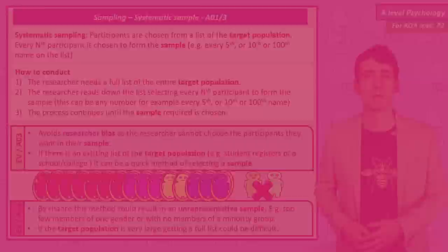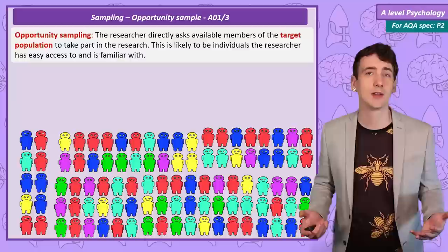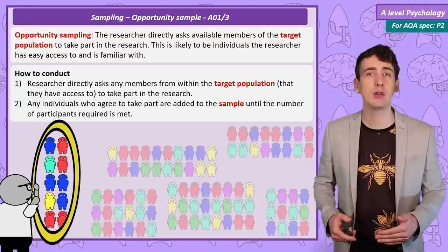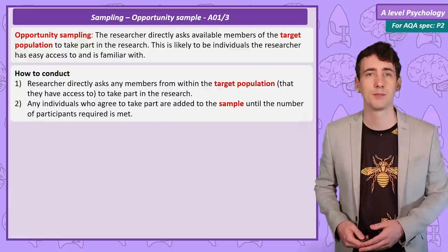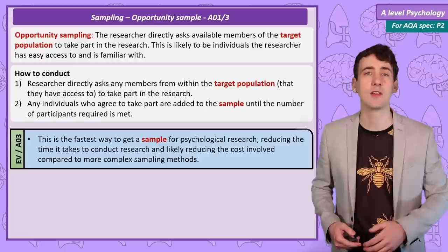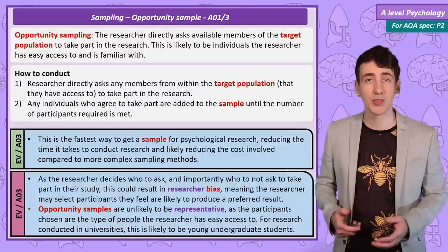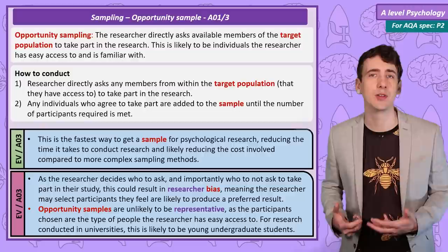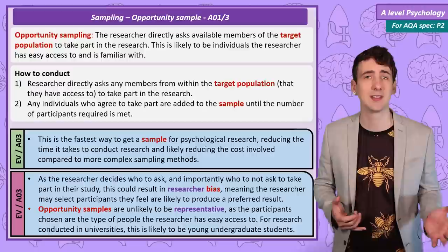An opportunity sample is the easiest sample to get and the most commonly used. The researcher simply includes anyone in the sample that they can get their hands on, by asking them to take part. For that reason many psychology studies are actually conducted on university students. A strength is it's a much faster way of getting a sample, saving money and allowing the researcher to complete the study faster. But there are big problems: there's a potential for researcher bias, as the researcher decides who to ask and who not to ask, potentially manipulating the results. Also, the sample is likely not representative as the researcher only has access to a limited section of the population — in most cases young university students.